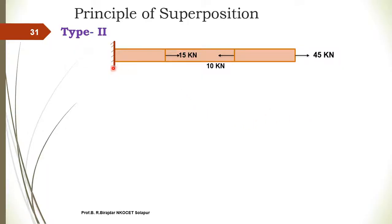In Type 2, only one side is fixed and the other side is free. In the previous case, both ends were free so we could start from either the left or right side. But here, as one end is fixed, we cannot start the free body diagram from the left hand side, so we have to start from the right hand side.